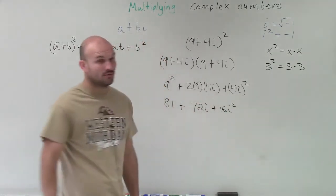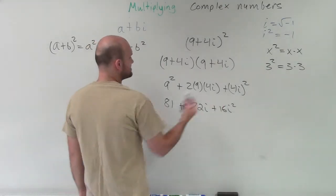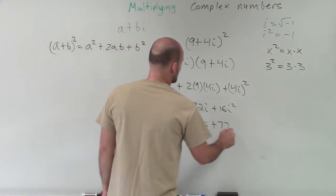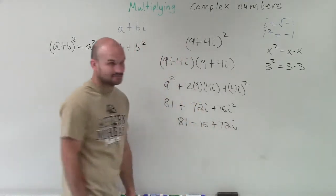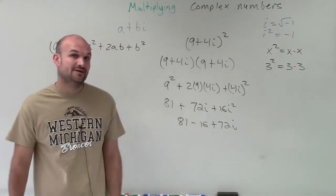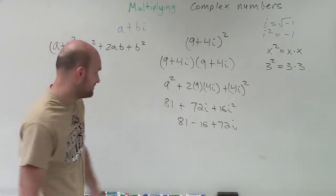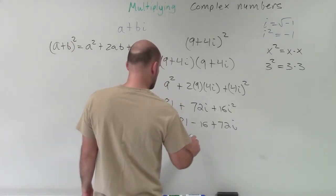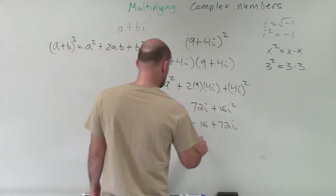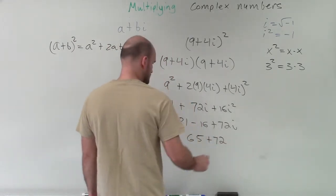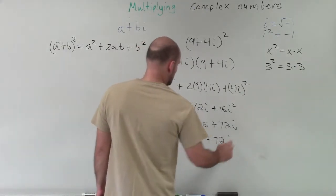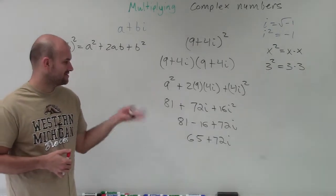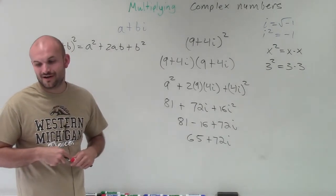Remember, i squared represents negative 1. Negative 1 times 16 will be negative 16. So therefore we have 81 minus 16 plus 72i. Then all we need to do is compute 81 minus 16, which gives us 65 plus 72i as your final answer.